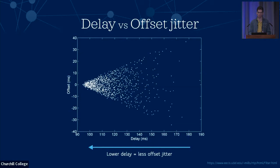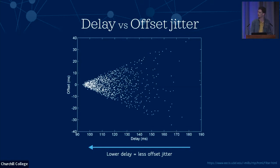As motivation for why the lowest delay gives us this, there's a plot of delay versus offset for lots of samples to the same server. We can see that as the delay increases, the variation in the offset also increases. So if we have a sample with a lower delay the variation in the offset is less, making the sample likely to be more accurate. At least partly this is because with a lower delay there's less chance for asymmetry between the request and the response message.